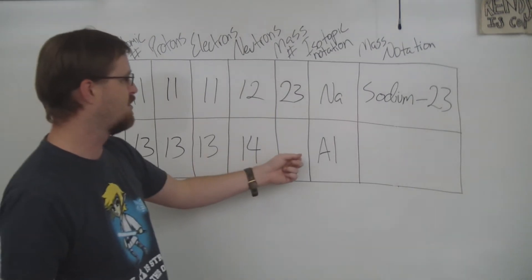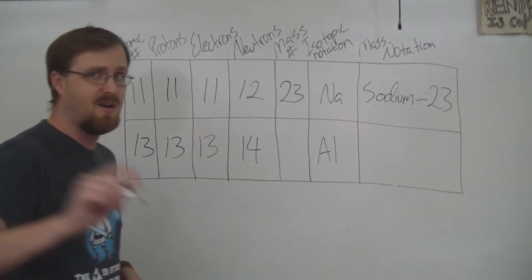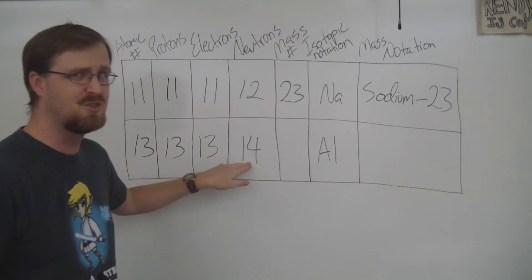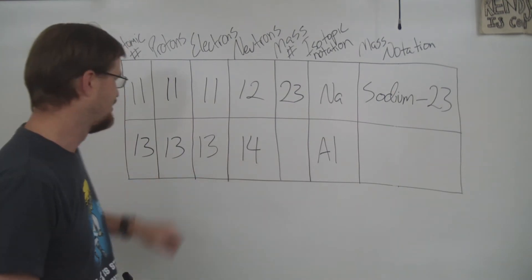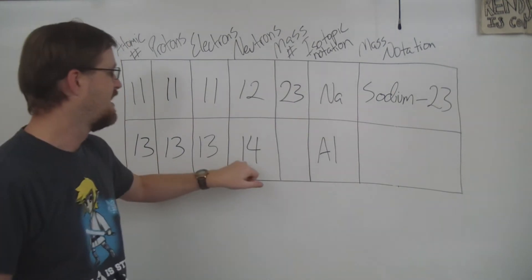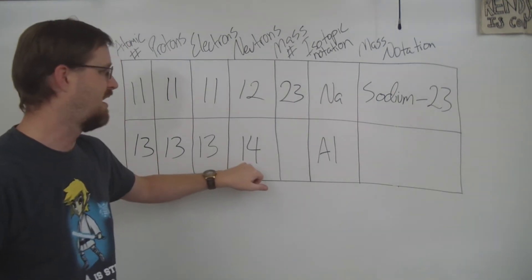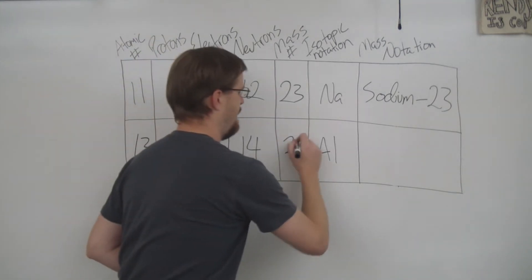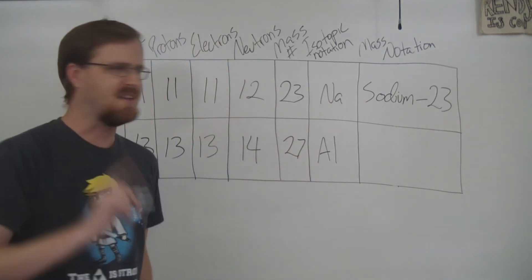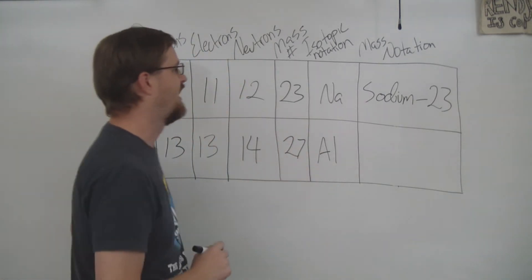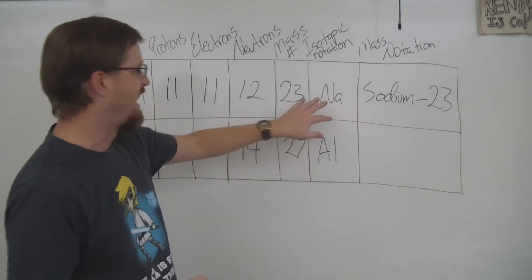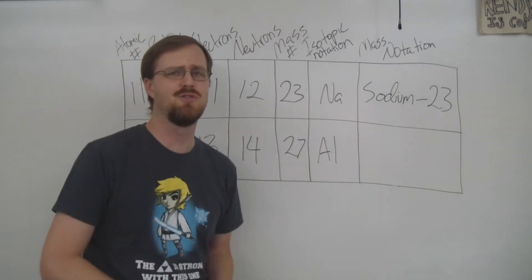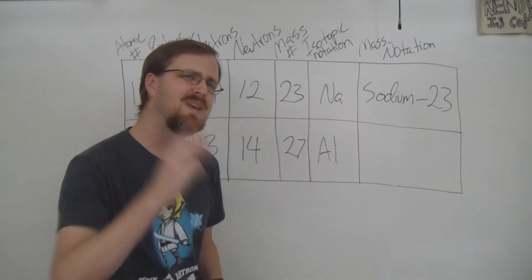Let's look at the next row. We don't know the mass number, but we already know the number of neutrons, so we just add protons plus neutrons to get the mass number.